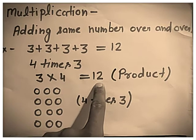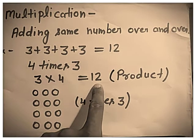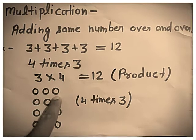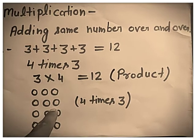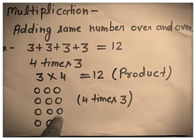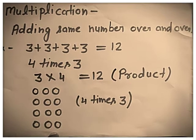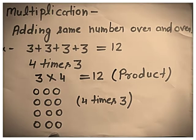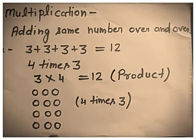The result of multiplication is called product. We can count groups: 1 time 3, 2 times 3, 3 times 3, 4 times 3. In this way, you can find the product of two numbers.